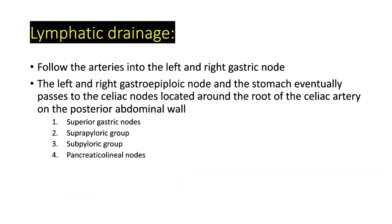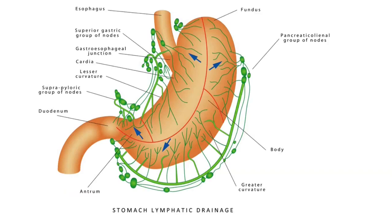The lymphatic drainage follows the arteries into the left and right gastric nodes, and the left and right gastro-epiploic nodes. Lymph from the stomach eventually passes to the celiac nodes, located around the root of the celiac artery on the posterior abdominal wall. The regional node groups include the superior gastric node, the suprapyloric group, the subpyloric group, and the inferior gastric nodes.